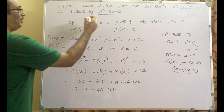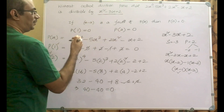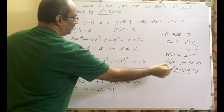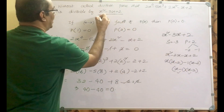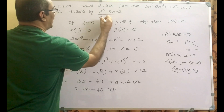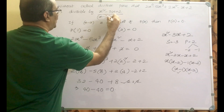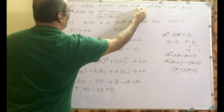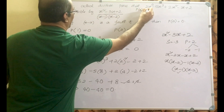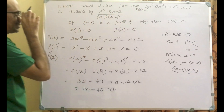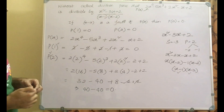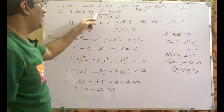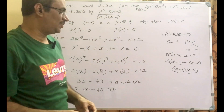We got p of 1 equals 0 and p of 2 equals 0. That means x minus 1 is a factor and x minus 2 is a factor of p of x. Therefore, if x minus 1 and x minus 2 are individually factors of p of x, then automatically their product, x square minus 3x plus 2, is also a factor. In other words, the polynomial is divisible by x square minus 3x plus 2.